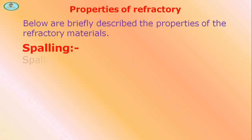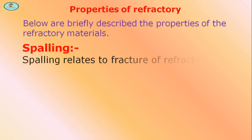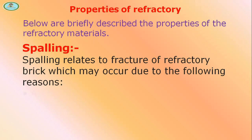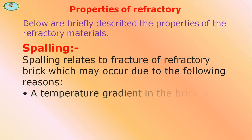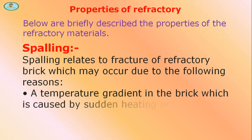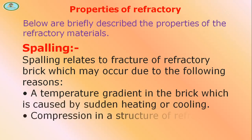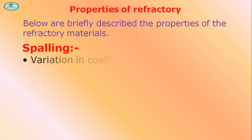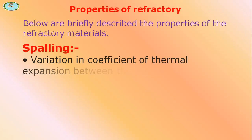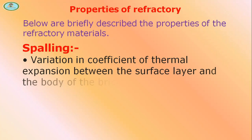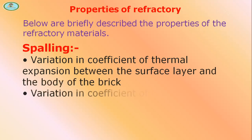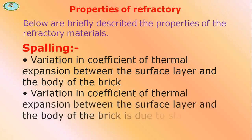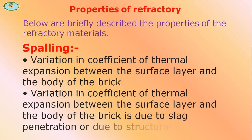Spalling relates to fracture of refractory brick, which may occur due to the following reasons: a temperature gradient in the brick caused by sudden heating or cooling; compression in the structure of refractory due to expansion; and variation in the coefficient of thermal expansion between the surface layer and the body of the brick, due to slag penetration or structural change.